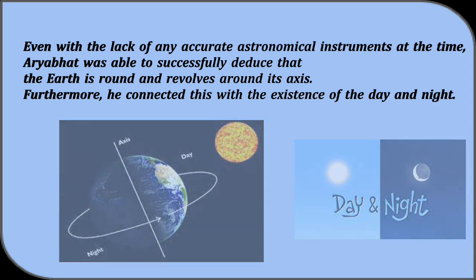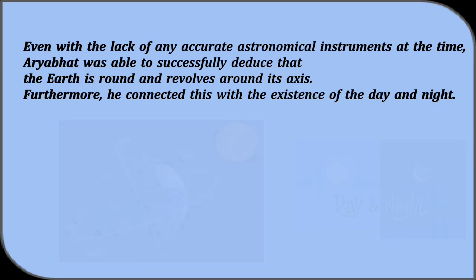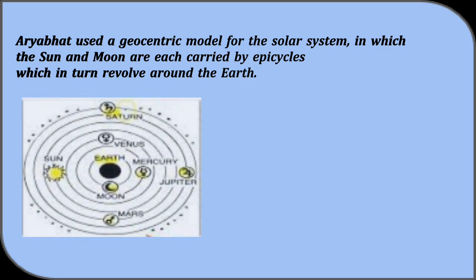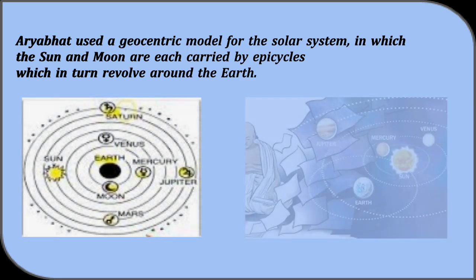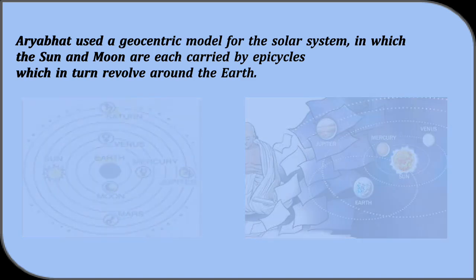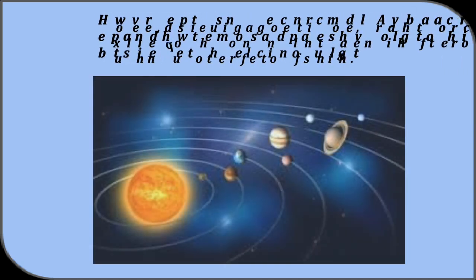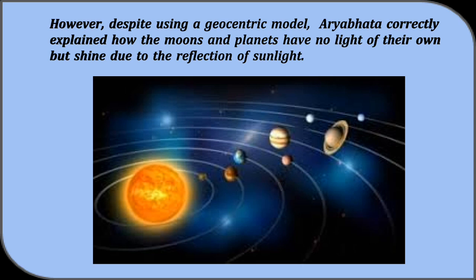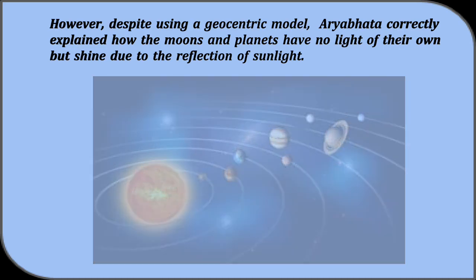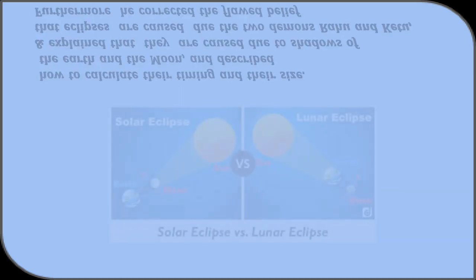Aryabhata used a geocentric model for the solar system in which the sun and moon are each carried by epicycles which in turn revolve around the earth. However, despite using a geocentric model, Aryabhata correctly explained how the moon and planets have no light of their own but shine due to the reflection of sunlight.